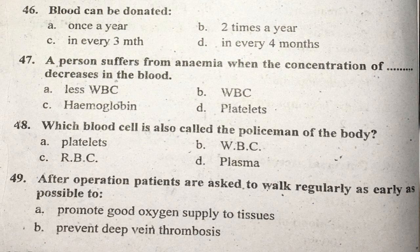Question forty-eight: Which blood cell is also called the policeman of the body? WBC (white blood cell) is called the policeman of the body. Right answer is B — WBC.